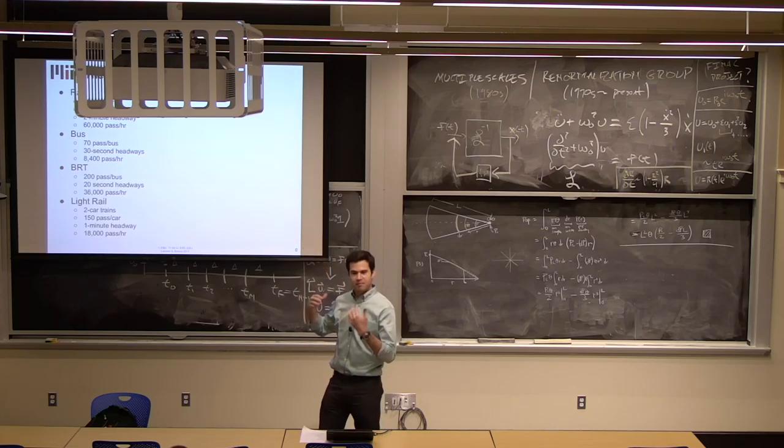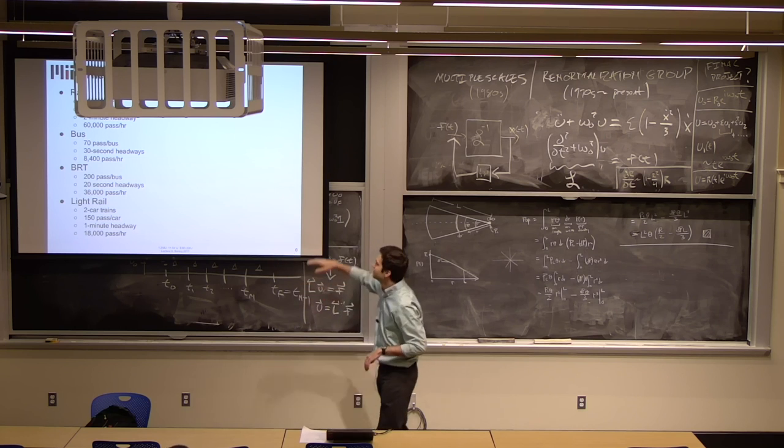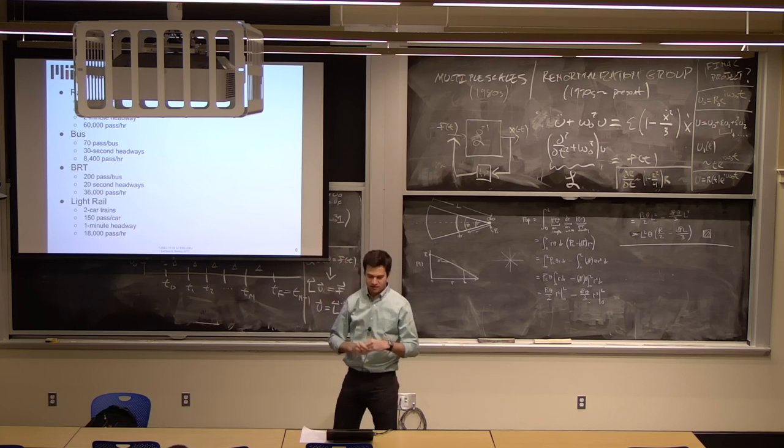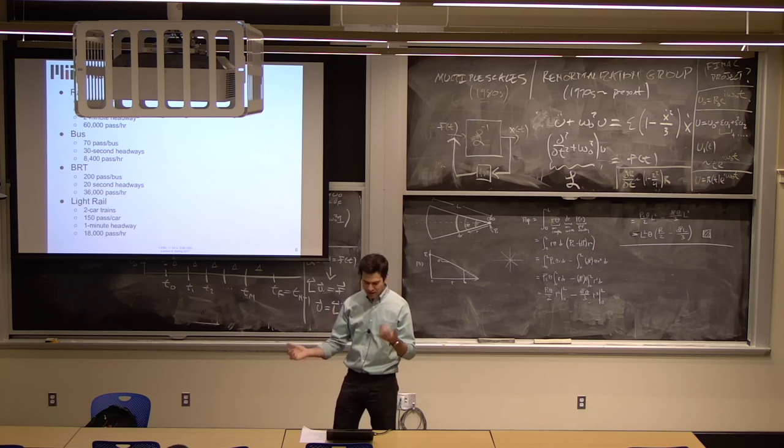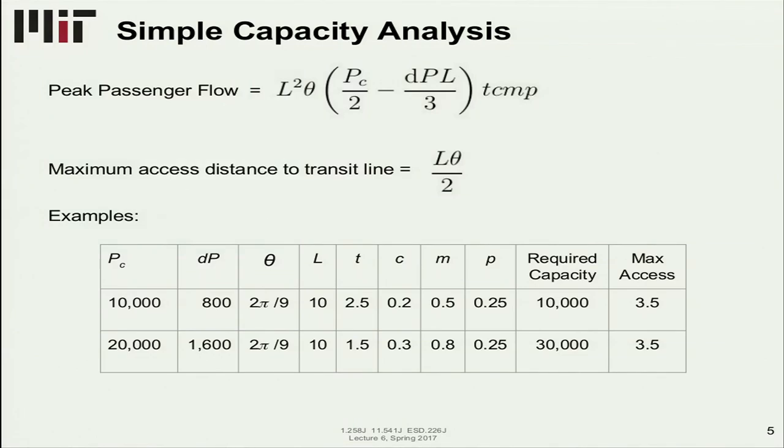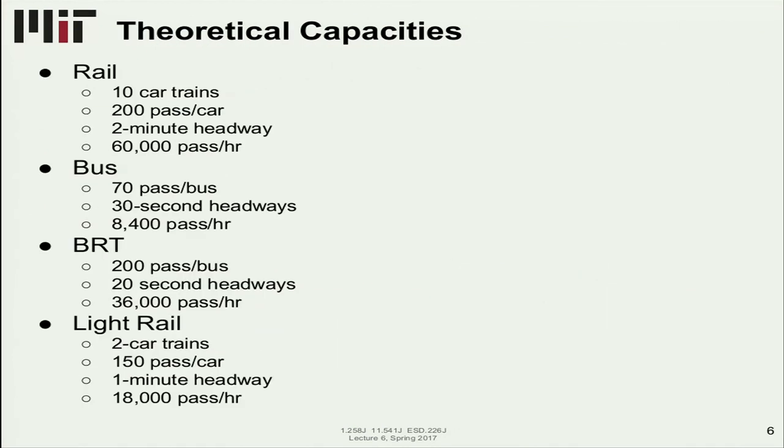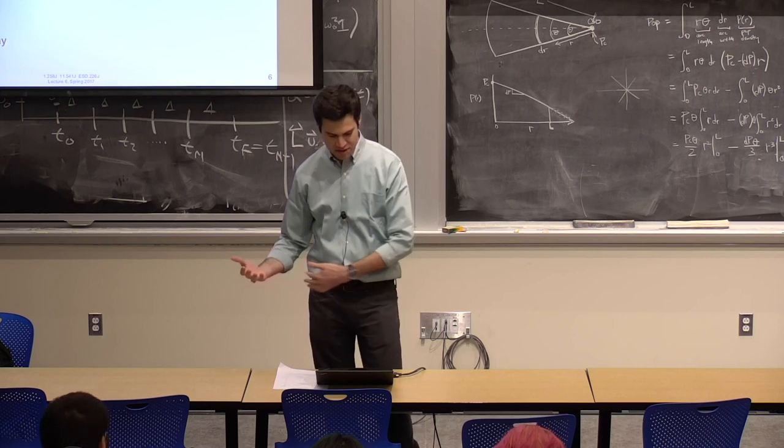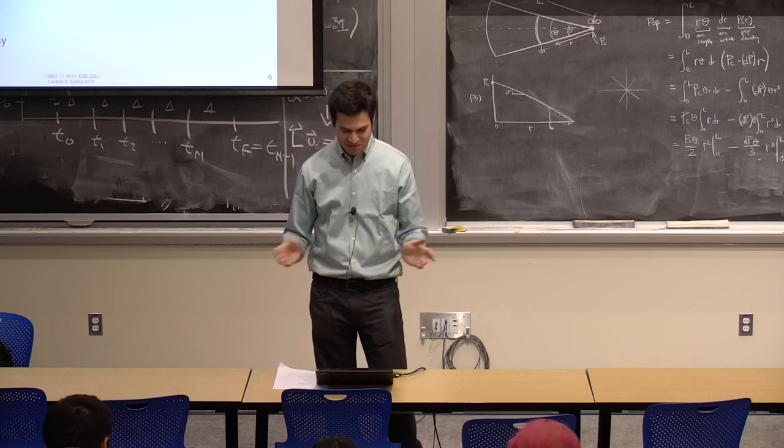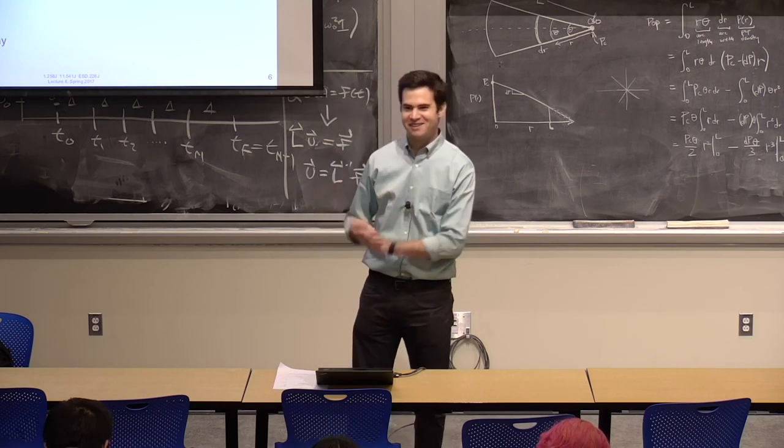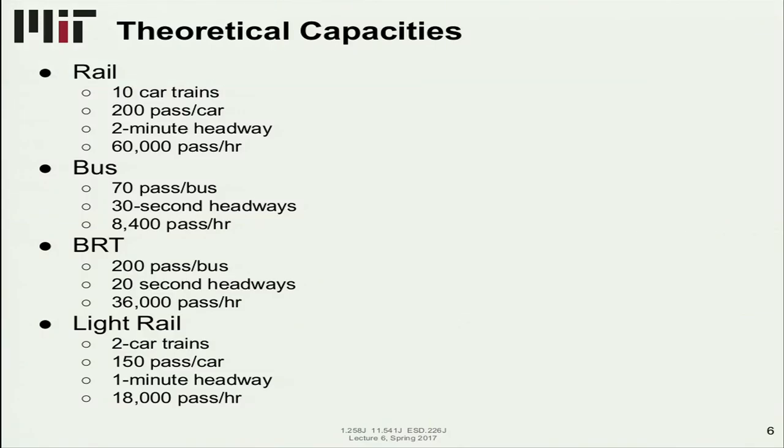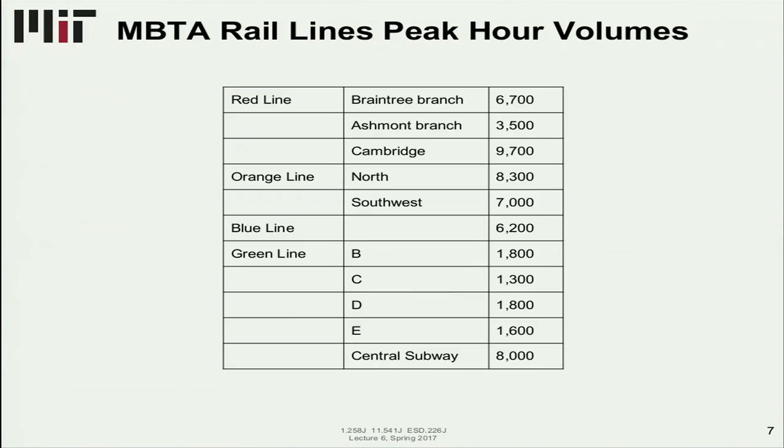BRT vehicles are longer. So you might fit 200 people in one of these double-articulated vehicles. You might have even 20-second headway with good facilities. That gives you 36,000 passengers per hour. Light rail, I'm assuming a two-car train here, but we could have three-car trains. Based on a two-car train assumption and 150 passengers per car, and assuming one-minute headway, that's 18,000 passengers per hour. So you can compare these. These are all kind of upper bounds.